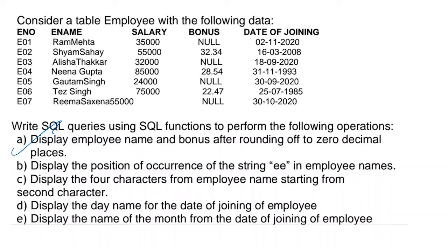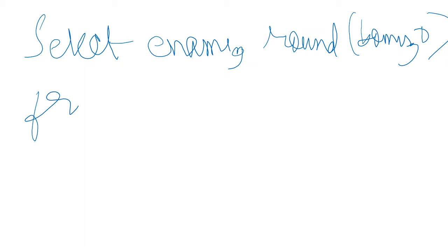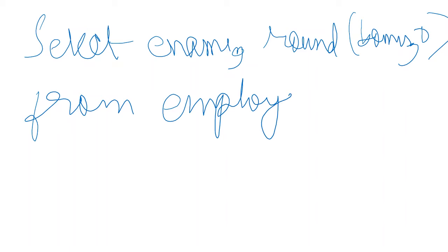We have to display employee name and bonus, but we have to round off bonus to zero decimal places. So what we'll write is: SELECT ename, ROUND(bonus, 0) FROM employee. The ROUND(bonus, 0) means I want bonus to be rounded off to zero decimal places. So this was the answer for the first question.